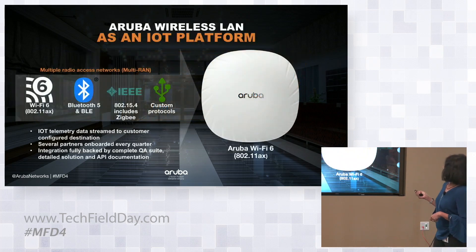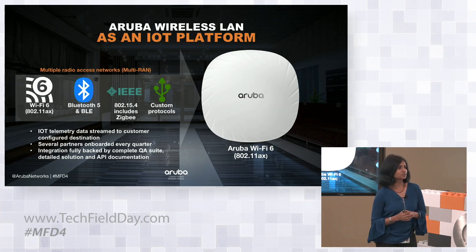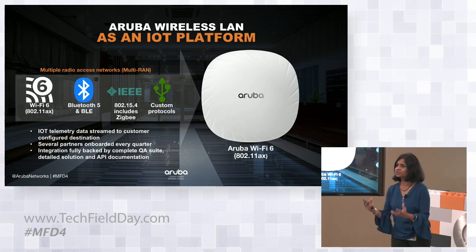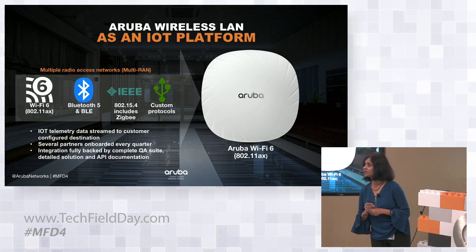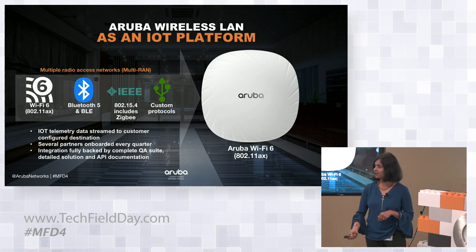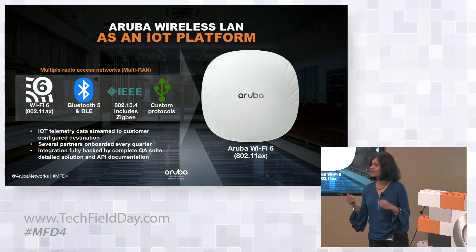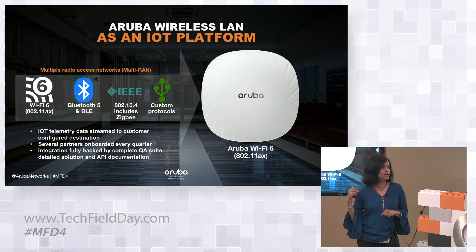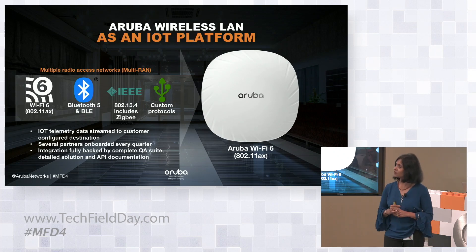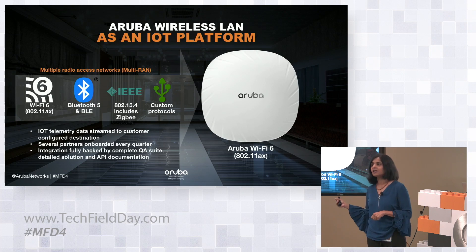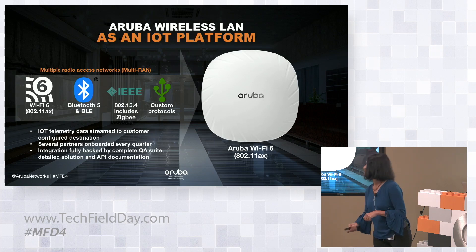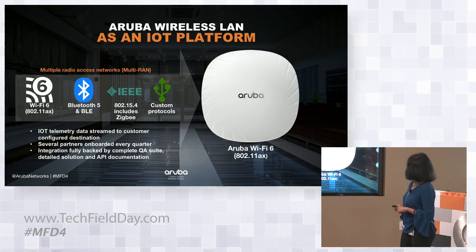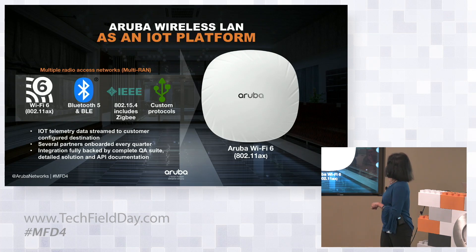Aruba's solution is focused on an integrated experience that addresses those pain points around cost and additional radio access networks. We have fleshed out our indoor access point portfolio in the Wi-Fi 6 space. We've always had an integrated BLE radio within our access points, and what we added in the 500 series Wi-Fi 6 access points is the 802.15.4 radio on which the software stack for ZigBee can be implemented. So the Aruba 500 series provides both BLE and ZigBee.